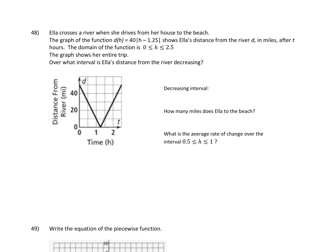All right, this problem looks familiar. I think we had one already in this review, so do you think there's going to be one on the exam? I think there might be. Okay, so number 48: Ella crosses a river when she drives from her house to the beach. The graph of the function d(h) = 40 times the absolute value of h minus 1.25 shows Ella's distance from the river d in miles after t hours. The domain of the function is 0 ≤ h ≤ 2.5. The graph shows her entire trip.